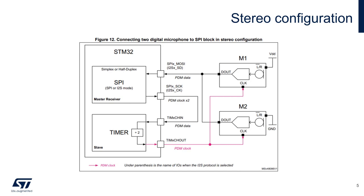Given a target frequency for the microphones equal to the PDM clock, the SPI block will generate a frequency equal to PDM clock times two. This clock signal is then given as input to an STM32 timer which divides it by two to deliver the target PDM clock to the microphones.